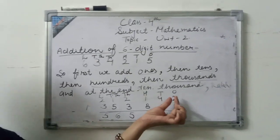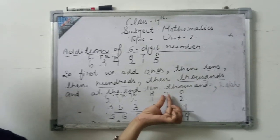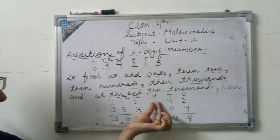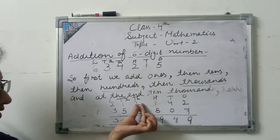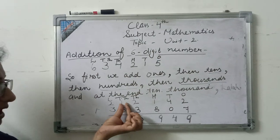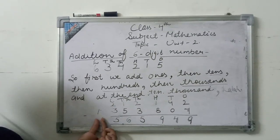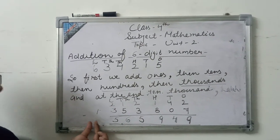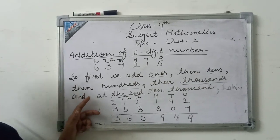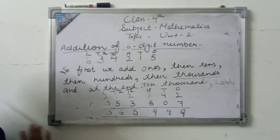Process is the same. First 1st place, after then 10th, after then 100th, after then 1000th, after then 10,000th. And at the last, we will add digit at lakhs place. Clear?